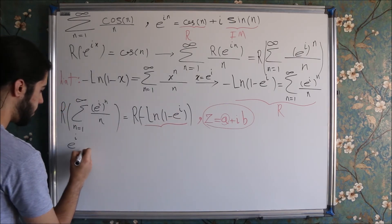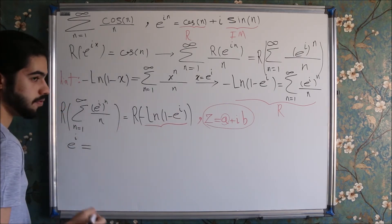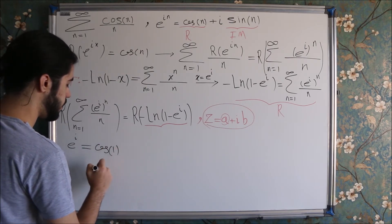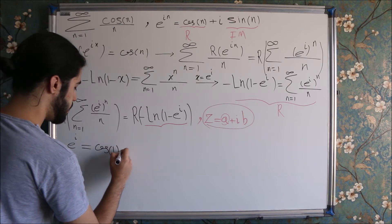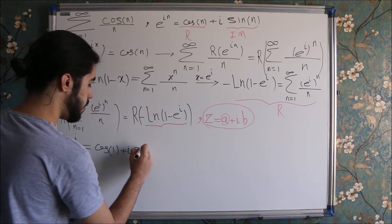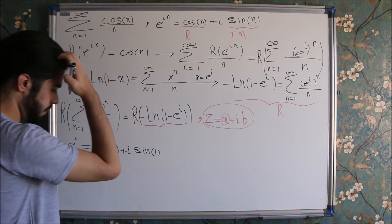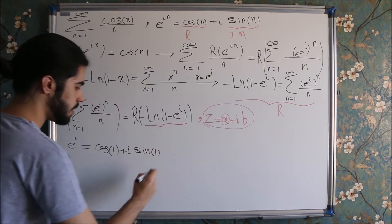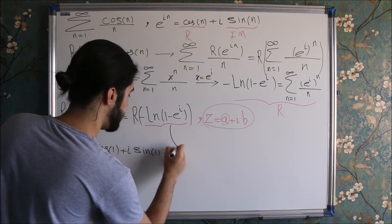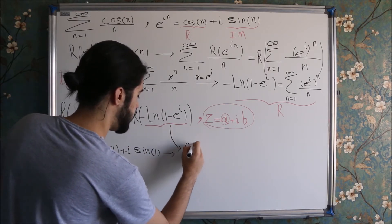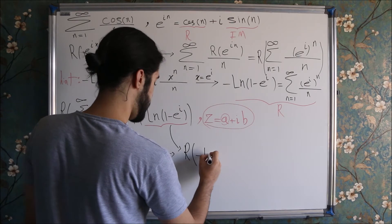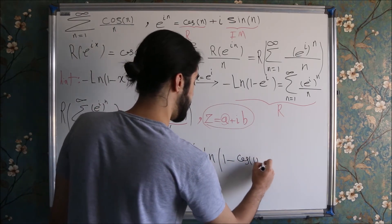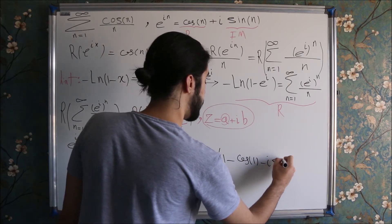Based on Euler's formula, e to the i is nothing but cosine of 1 plus i times the sine of 1 — one radian, I mean. So I can plug this instead of e to the i, and I will get the real part of minus ln of 1 minus cosine of 1 minus i times the sine of 1.